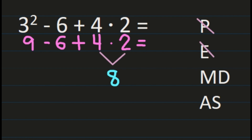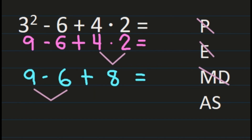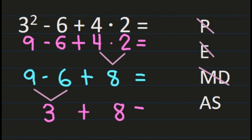I'm going to bring down the rest of my problem so I can see exactly what I have left. Noting that I am adding the 8 because there was an addition sign in front of the 4. Now I don't see any more multiplication and division, so I'm on addition and subtraction. Starting on the left with 9 minus 6, which is 3. Then 3 plus 8 is 11. My final answer is 11.